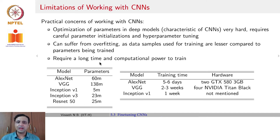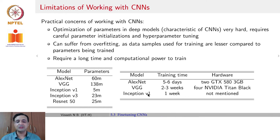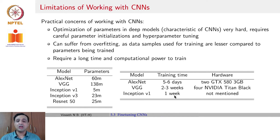CNNs fundamentally require a long time and a lot of computational power to train. AlexNet took about a week to train on two NVIDIA GTX 580 GPUs. VGG took two to three weeks on four NVIDIA Titan Black GPUs, and Inception v1 took about a week on dedicated hardware. All this becomes even more difficult when designing an architecture for a new domain, where you run it for a week, change a hyperparameter, run it again — this approach will not scale.